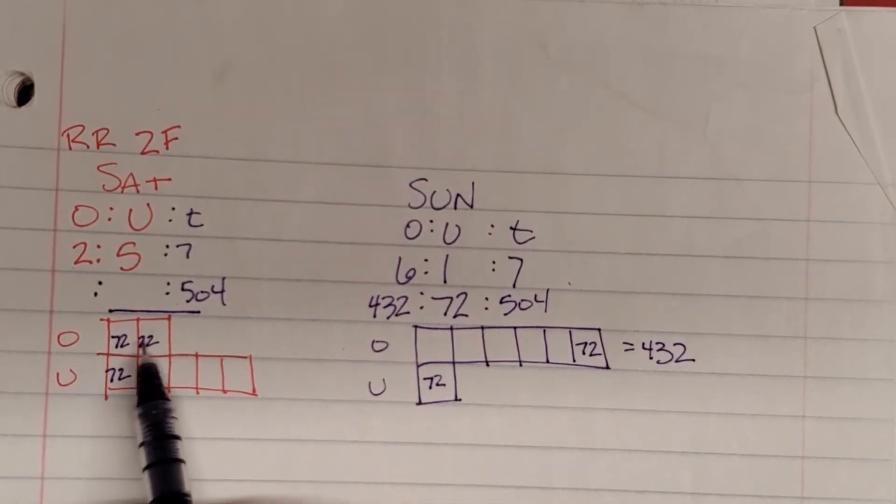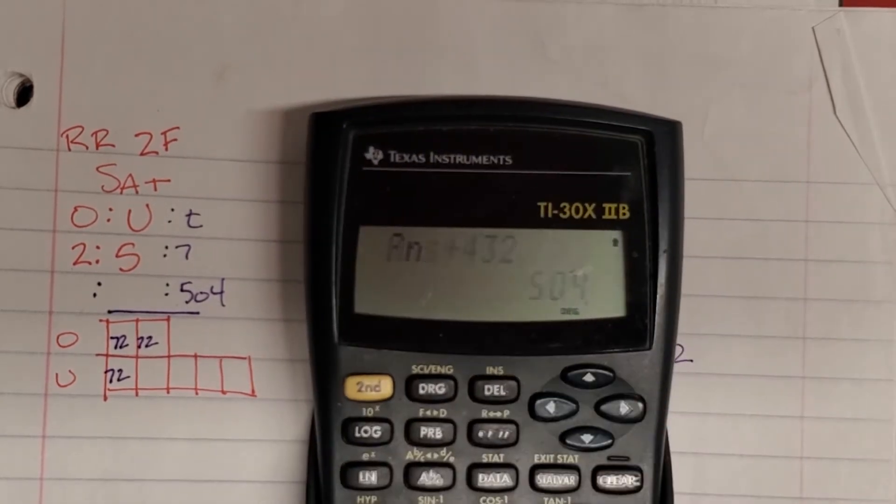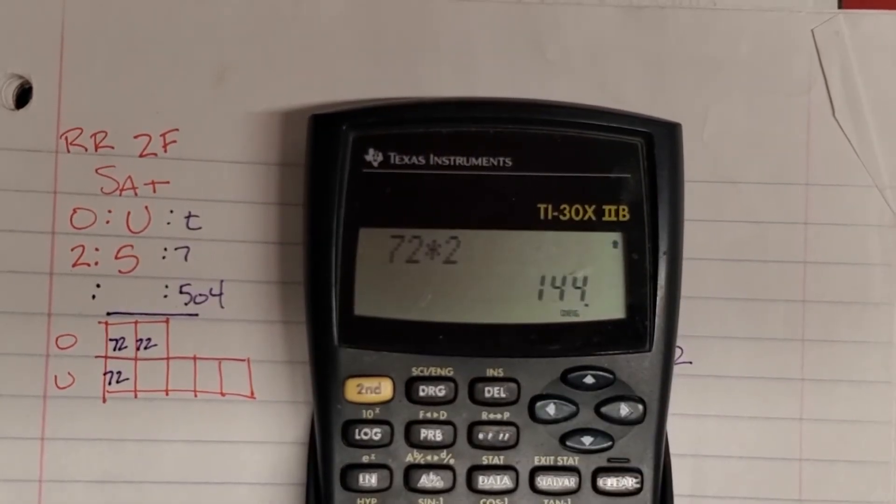You get the point. So how many occupied rooms? Well, there's two boxes, Misty. So 72 times two is 144.